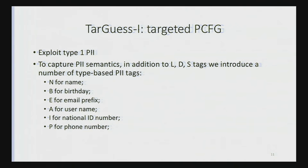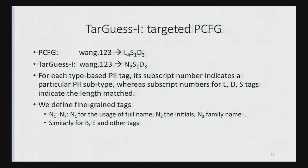Now a quick overview of our Target 1 attack, which employs Type 1 PII only. We want to capture as much PII semantics as possible. Therefore, in addition to standard L, D, S tags, we introduce type-based PII tags: N for name, B for birthday, E for email prefix, A for username, I for national identity number or SSN, and P for phone number.